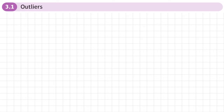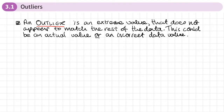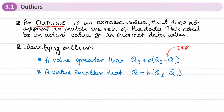This is the first section of Chapter 3 on representations of data, and this section is on outliers. An outlier is an extreme value that does not appear to match the rest of the data that we're looking at. This could be an actual value or it could actually be an incorrect data value, which is why this data appears to be a lot different from everything else.